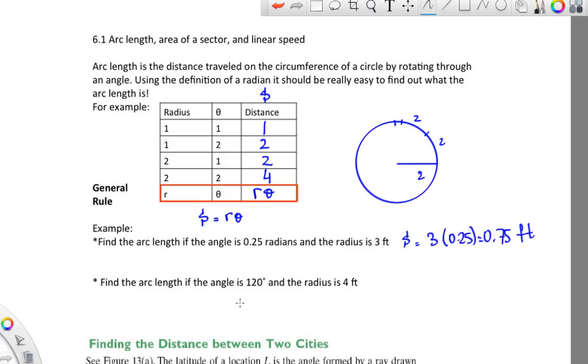Find the arc length if the angle is 120 degrees and the radius is 4 feet. So we just multiply, right? We do 4 times... Keep in mind you can't do 120. You have to convert 120 degrees into radians. As I mentioned, it has to be radians for us to work. So 120 over 1 times pi over 180, so it's 2 pi over 3. So the answer would be 8 pi over 3, and you can leave it or multiply it out.